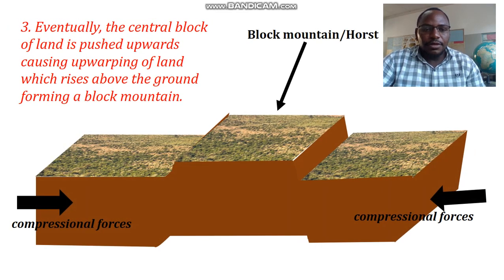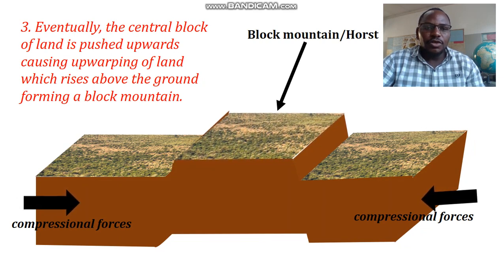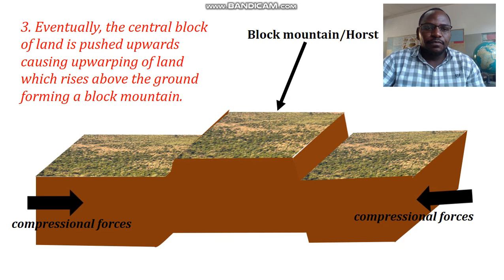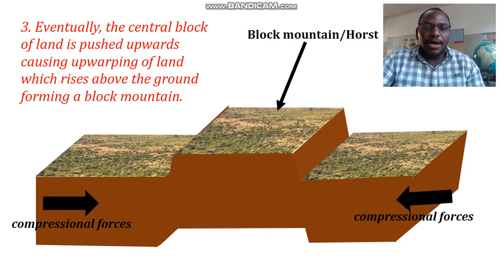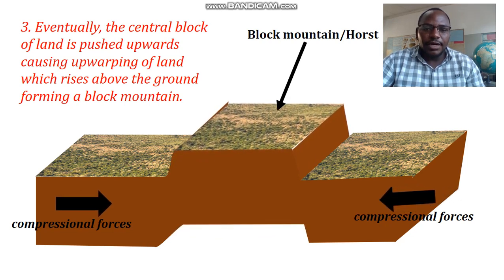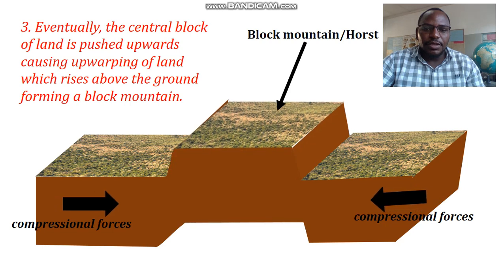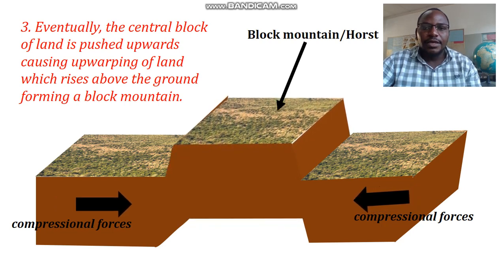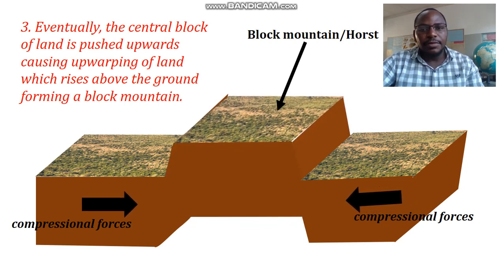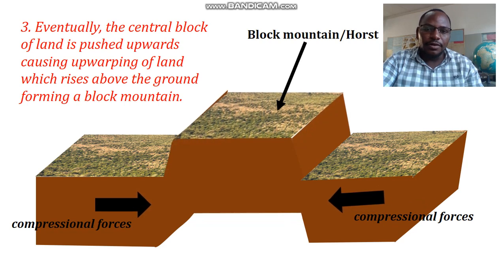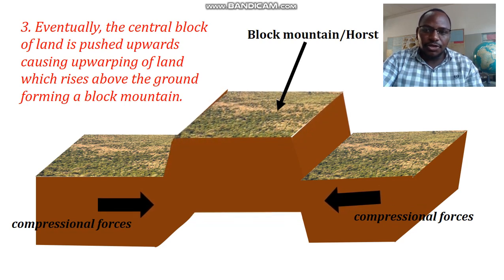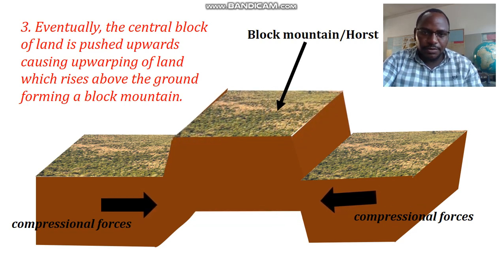As the middle block gradually moves upwards due to compression, it leads to upthrusting, which forms a block of land above the general ground. This forms the block mountain, which is also called a horst. Thank you for watching — remember to subscribe.